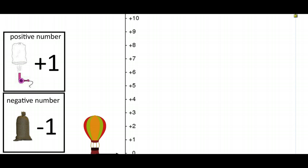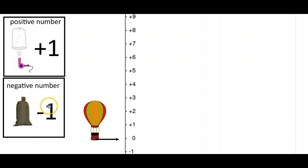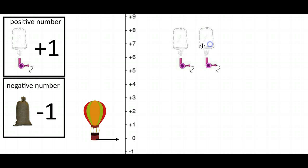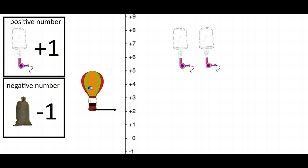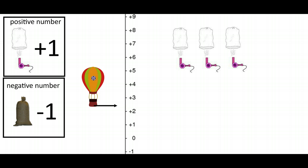I like to think of hot air as positive numbers and sandbags as negative numbers. For example, if I blew two bursts of hot air into my hot air balloon it would rise and end up at two — you can see it's at level plus two. If I give it another blast of hot air it would go to three.